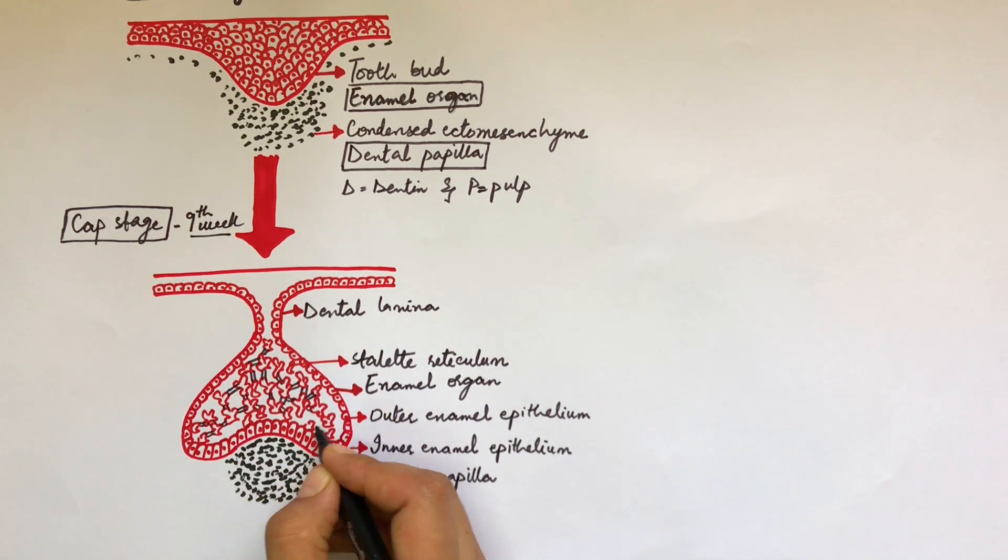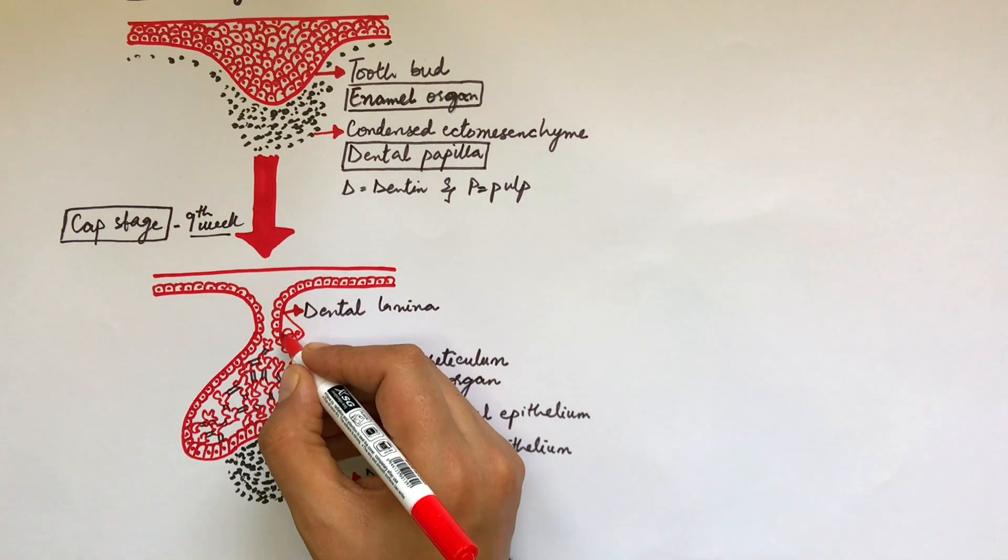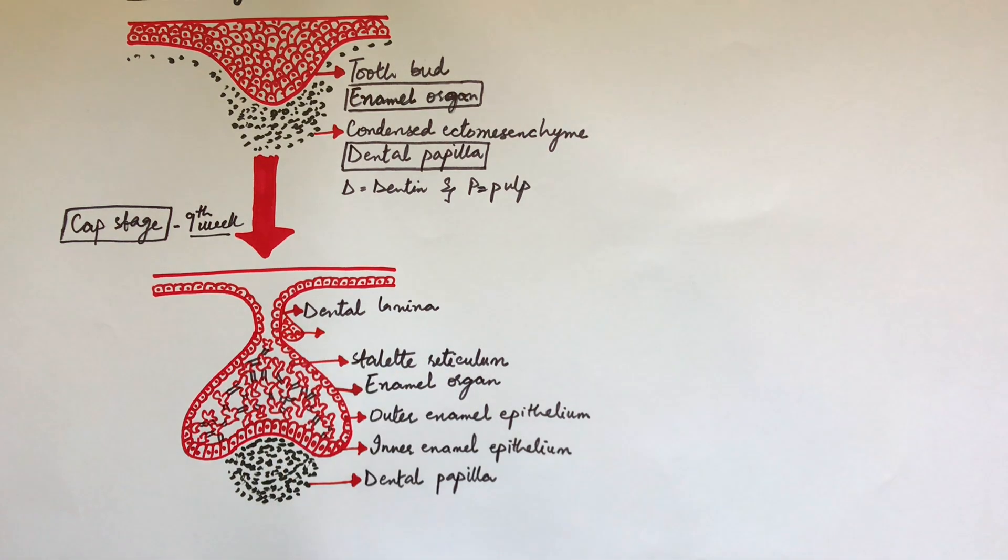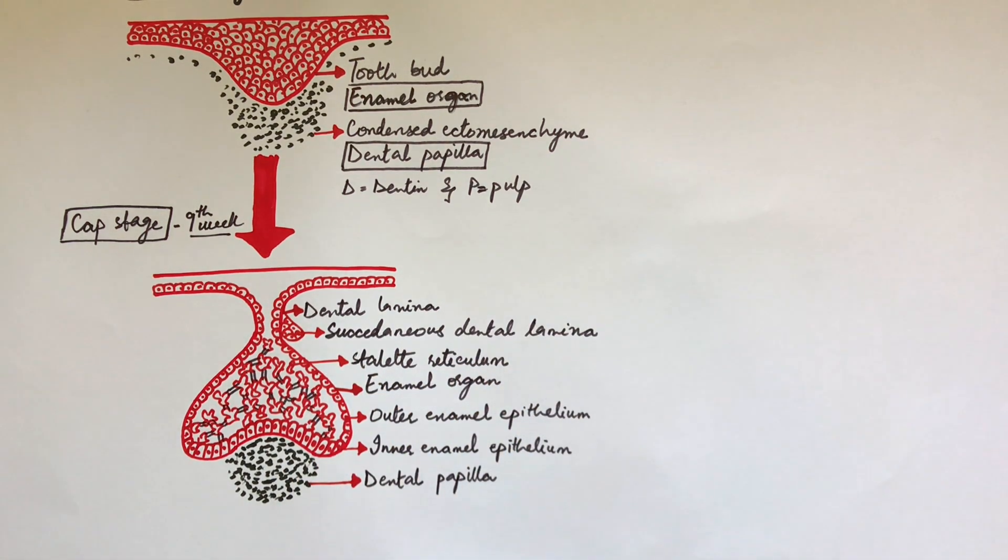But still, the cells remain connected with each other and with the underlying inner enamel epithelium through their desmosomal junctions. The successional dental lamina of the permanent tooth also arises at cap stage of tooth development and it will give rise to its permanent successor.